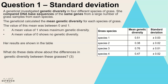First we've got a standard deviation question. A geneticist investigated genetic diversity in four different species of grass. She compared the DNA base sequences of the same genes from a large number of grass samples from each species, then calculated the mean genetic diversity for each species. The value was somewhere between zero and one, where one shows maximum genetic diversity and zero shows no genetic diversity.